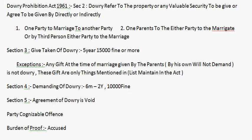Ab dowry mein kaun kaun aate hain? Dowry mein aate hain — sabse pehle aate hain parties: one party to the marriage to another party to the marriage. Dono parties hoti hain — bride aur bridegroom.